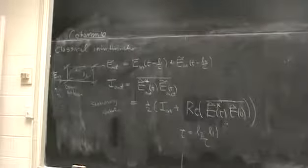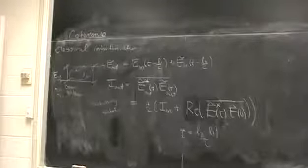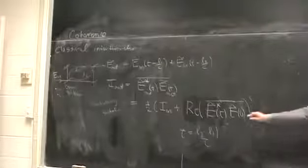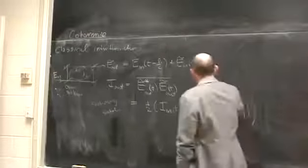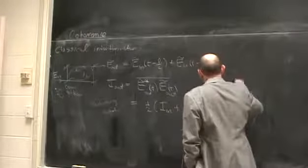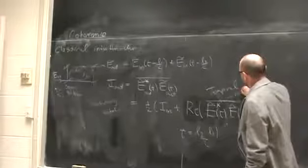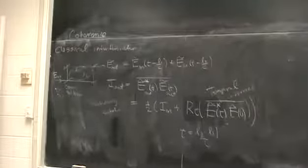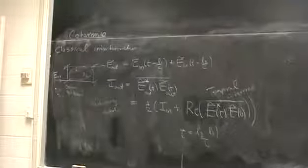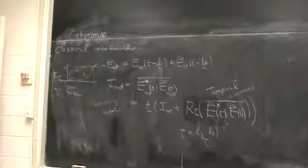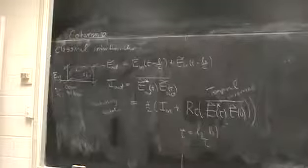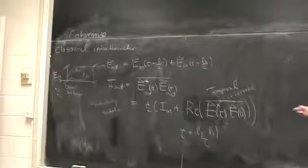What does it mean for this system to exhibit coherence? It means there is a well-defined correlation between the field at two different times — this is an example of temporal coherence. This autocorrelation function between the field and itself at two different times tells us the coherence. Light from a light bulb has only a finite coherence time due to collisions between the oscillators, giving a finite coherence time.